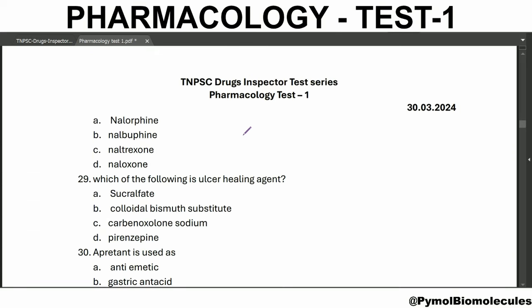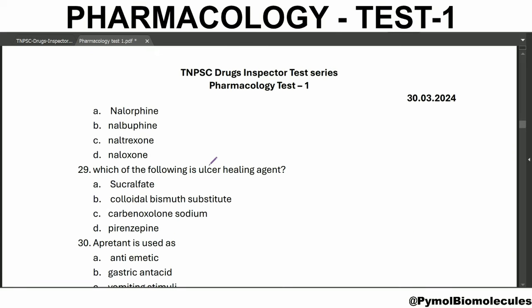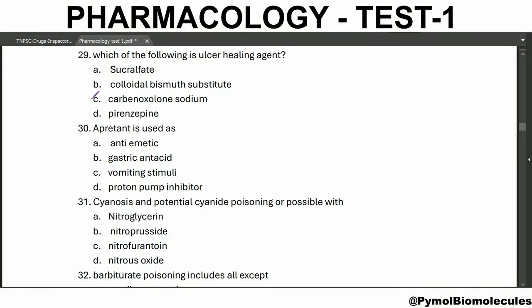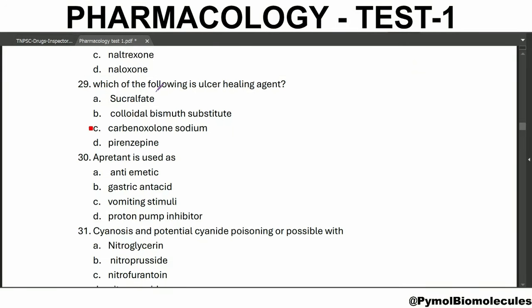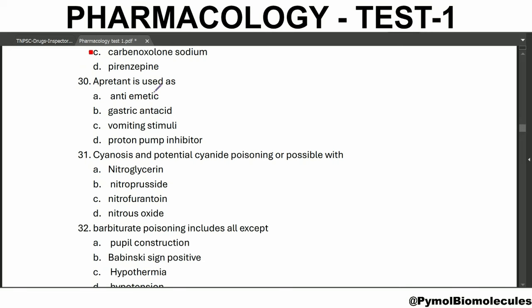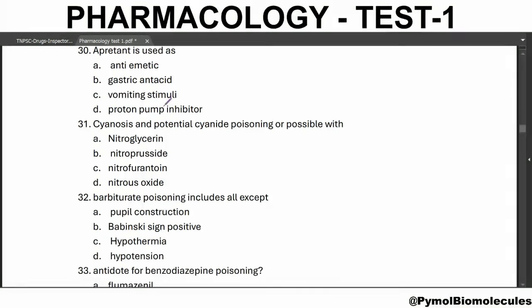Antidote for morphine poisoning is naloxone. Which of the following is an ulcer healing agent? Carbenoxolone sodium. These both are cytoprotective drugs. Aprepitant is used as an antiemetic. Cyanosis and potential cyanide poisoning are possible with nitroprusside.